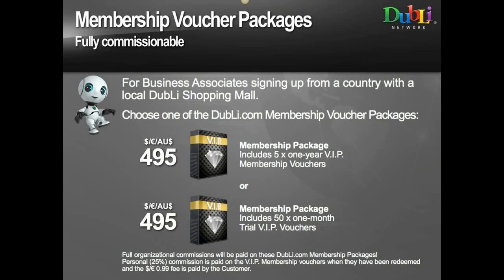The first package is $495 — the business associate package that gets us started as a team member. We have two options: one includes five one-year VIP memberships (retailable at $99 each), or we can select 50 one-month trial vouchers, which is better for those doing internet marketing who believe they can get more than five people to enroll as VIPs. It's our choice depending on what kind of business we're building.